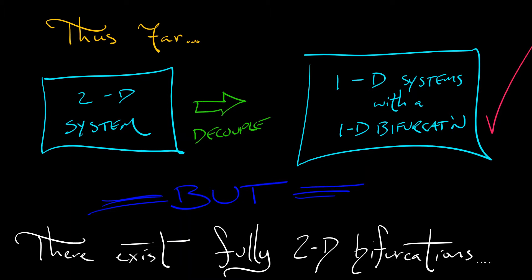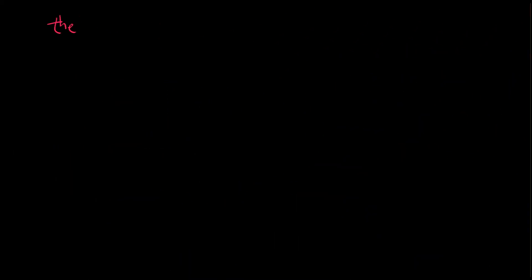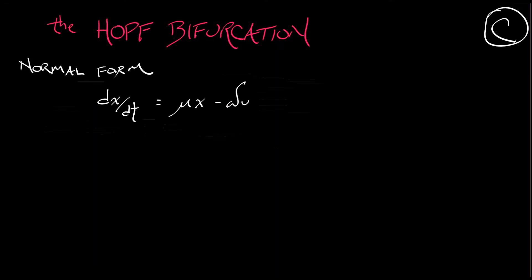And here is one of them. This is called the Hopf bifurcation, and it's in 2D continuous time. Here is the normal form. dx/dt equals mu times x minus omega times y plus c times x times quantity x squared plus y squared. dy/dt equals omega times x plus mu times y plus c times y times quantity x squared plus y squared.